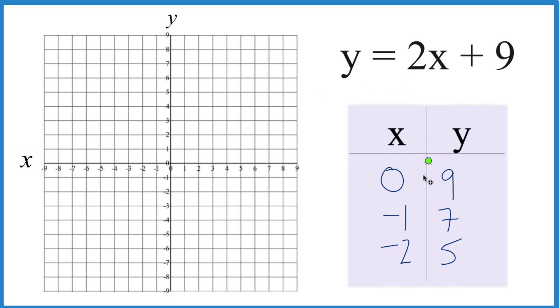So we'll start out with x is 0, y is 9. x is 0, and we go up to y is 9. Then we have x is negative 1, y is 7. Negative 1, 7.